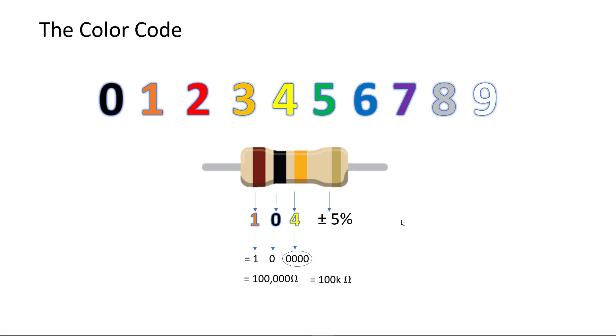The final band denotes a 5% tolerance, silver denotes a 10% tolerance, and a blank fourth band denotes 20%. Rarely will you encounter 10 or 20% tolerance resistors, though.